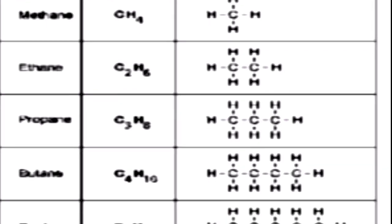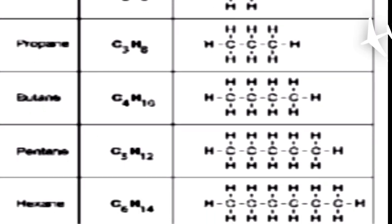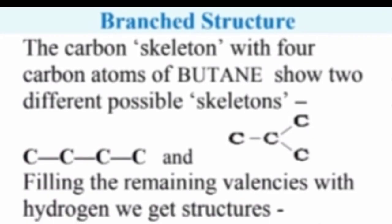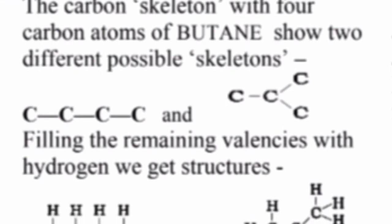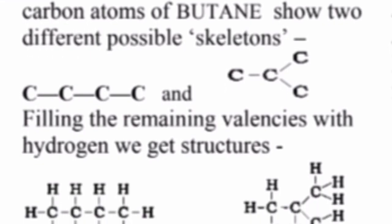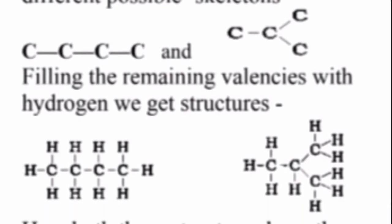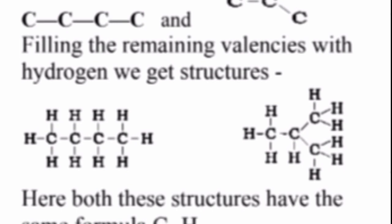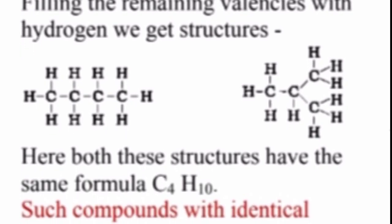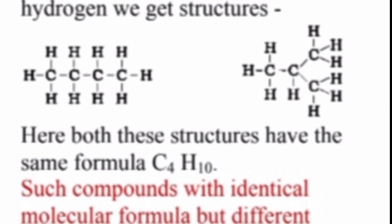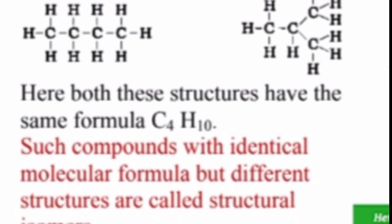In chain structures, carbon forms skeletons — for example, propane, butane, pentane, and hexane. The carbon skeleton with four carbon atoms, butane, shows two different possible skeletons. Filling the remaining valency with hydrogen gives us two different structures, both having the same molecular formula C4H10.